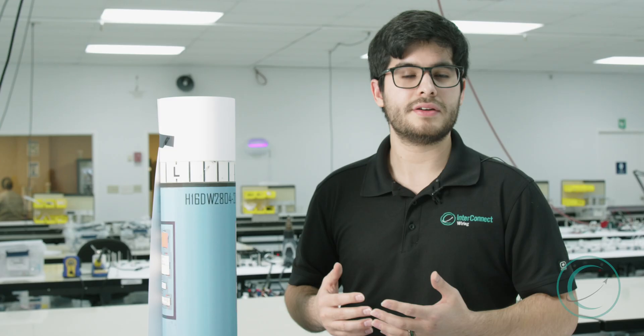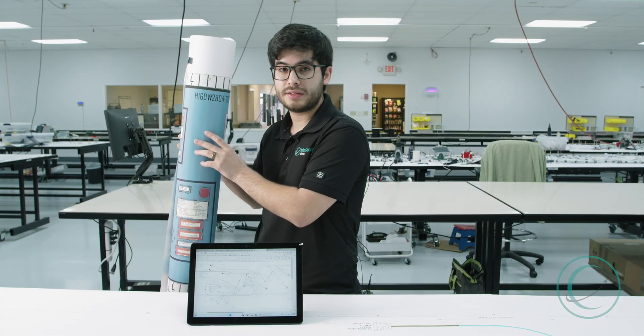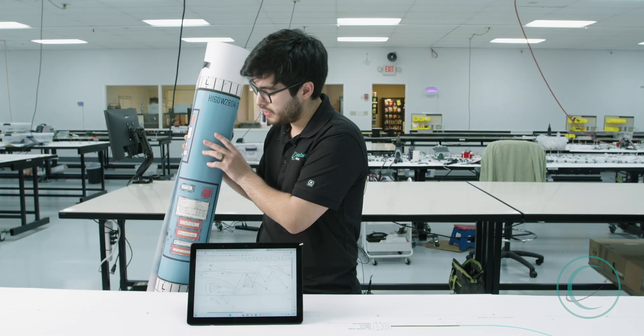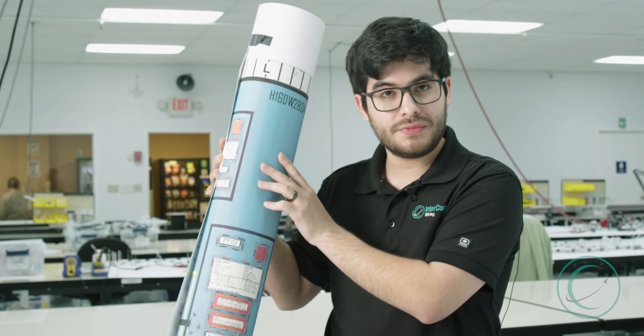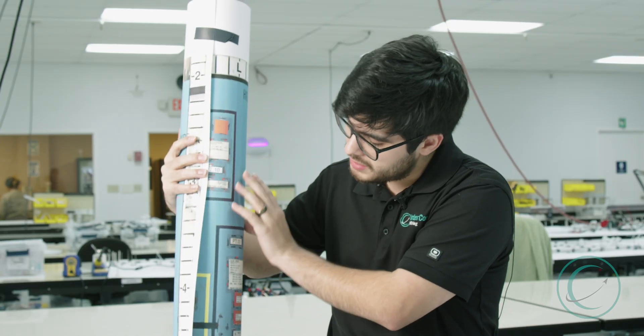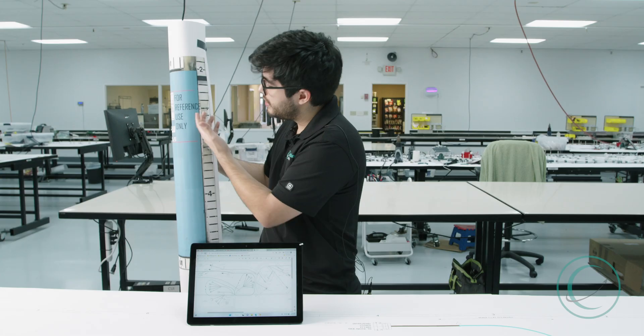And another method to make a hat at Interconnect Wiring is to dig up one of these. So this fossil is known as a mylar. These are really old pictures of a previously designed form board in which they use tape, notes, and different kinds of methods to mark down exactly what the harness would look like and how it would be built.